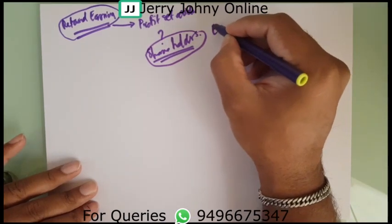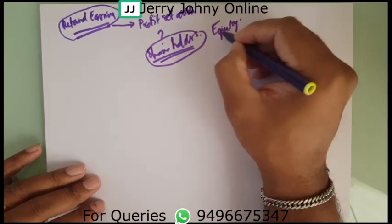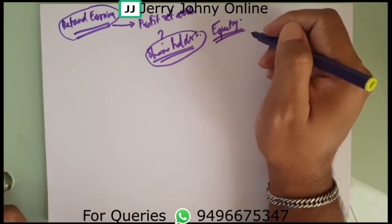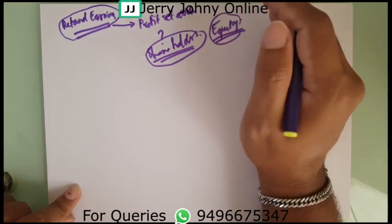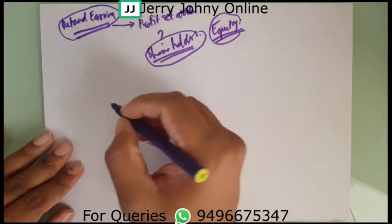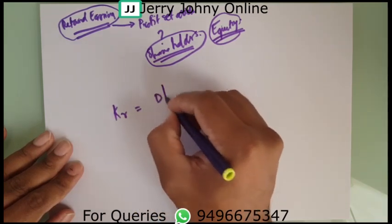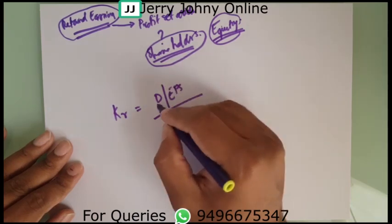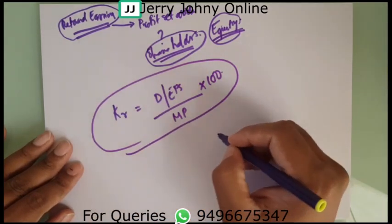So the cost of retained earnings should be equal to the cost of equity, because it has a basis in equity and cost of capital. The basic formula for calculating cost of retained earnings is KR = D (or EPS) divided by MP, multiplied by 100. This is the basic formula.